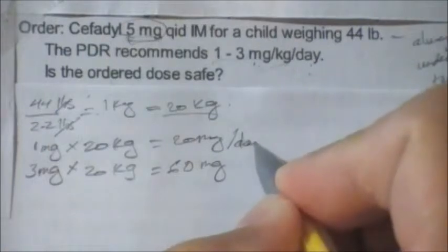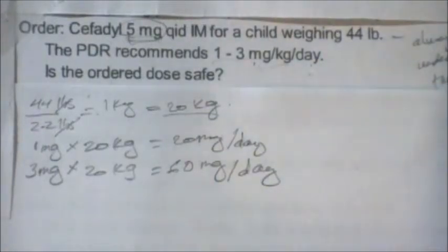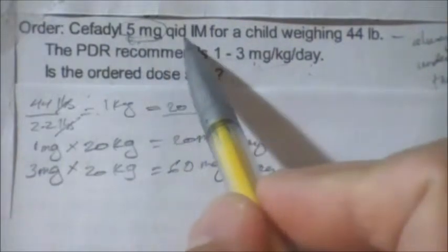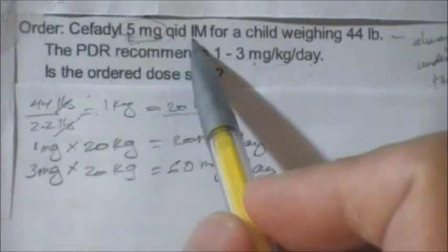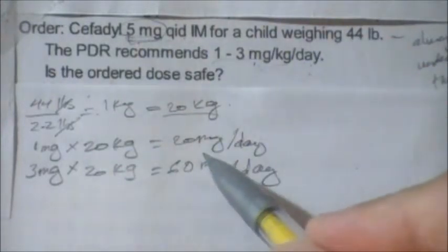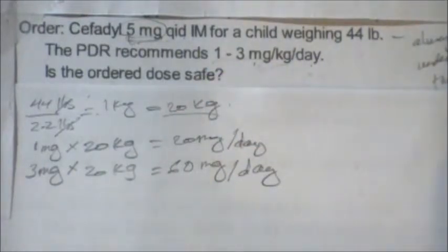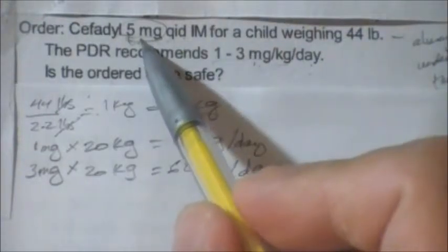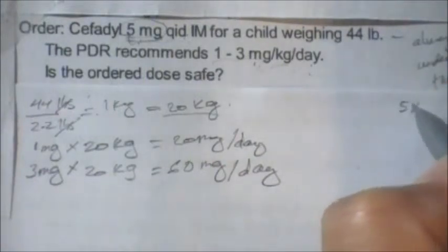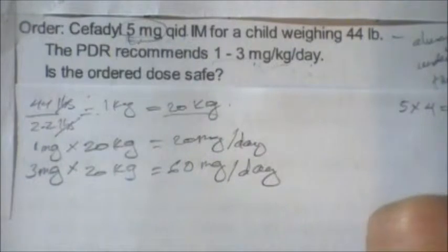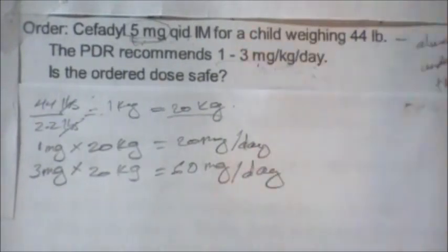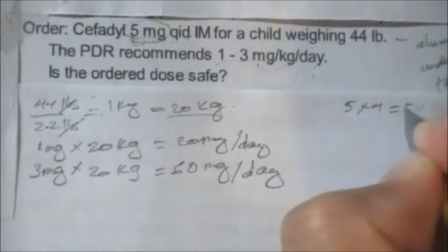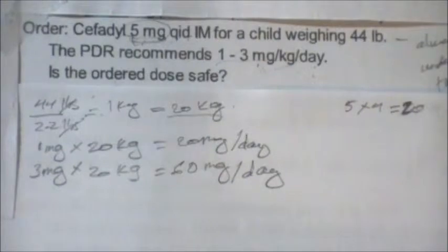That safe range — 20 to 60 milligrams — is per day. The order is 5 milligrams QID. QID means the patient receives the medication four times a day, so 5 milligrams times 4 equals 20 milligrams per day total.